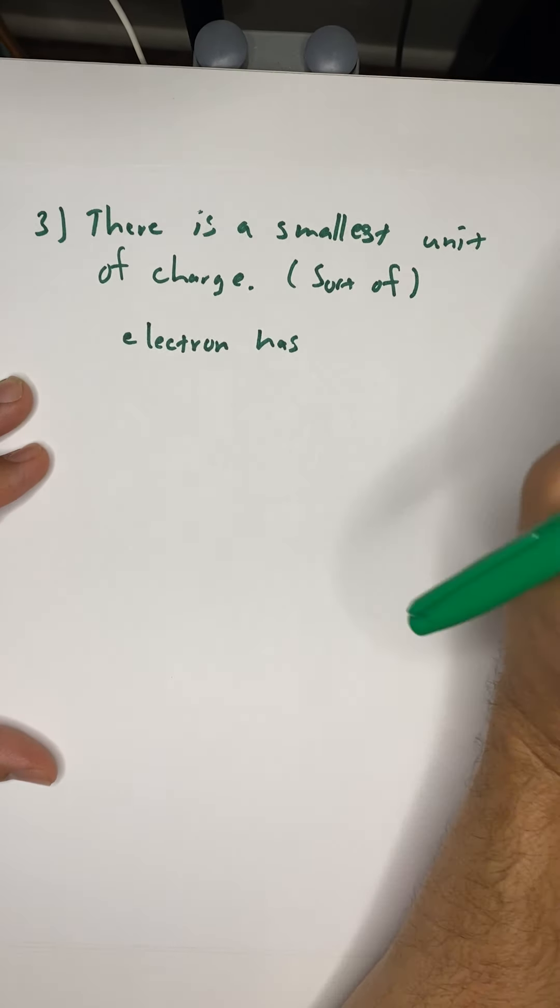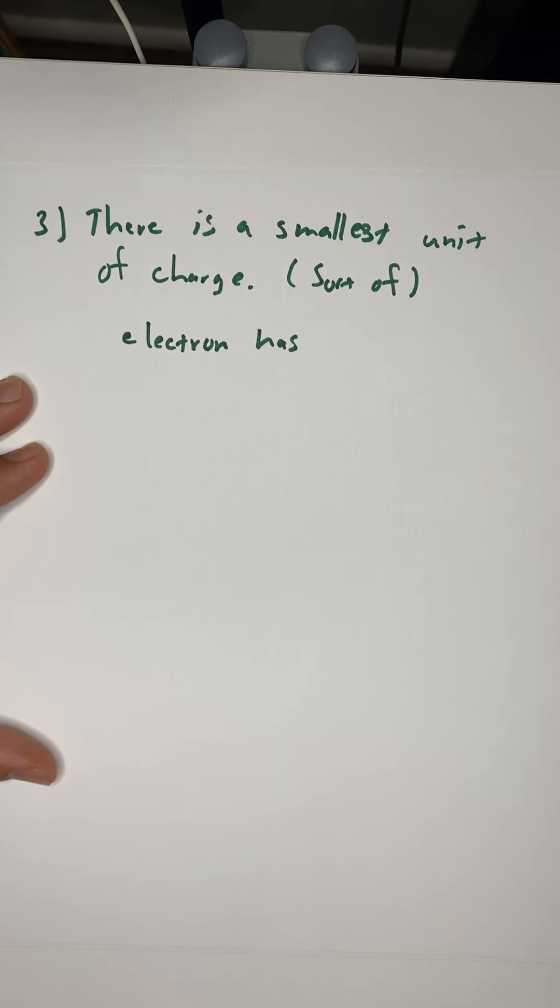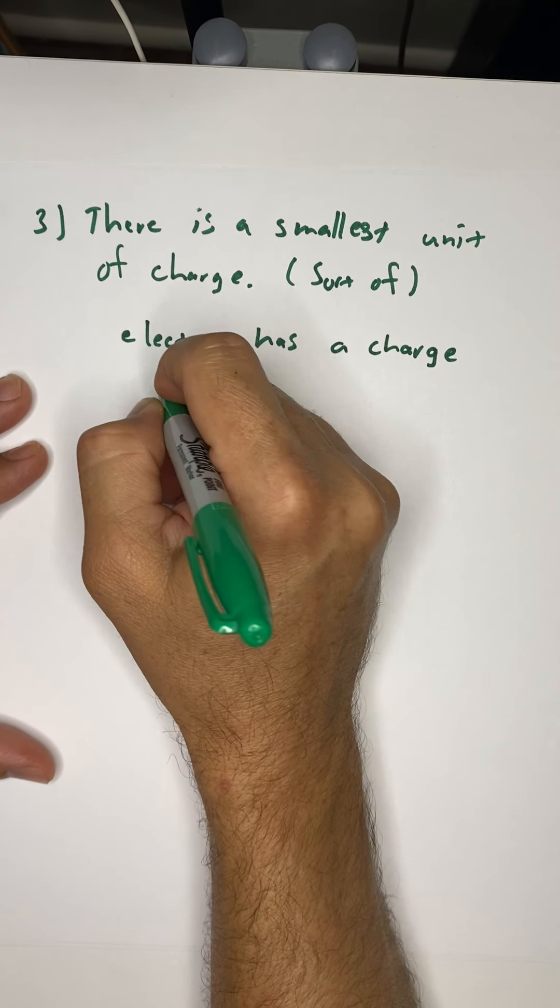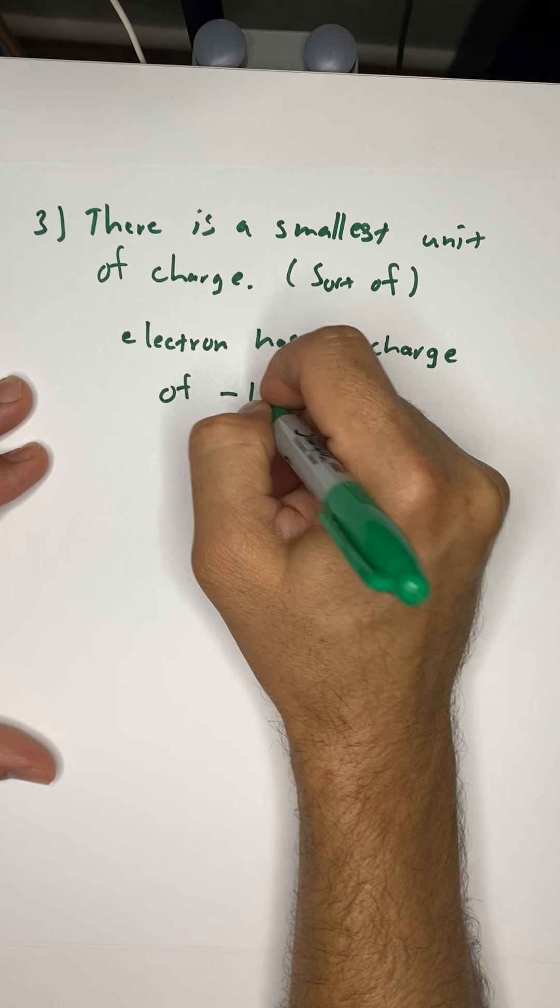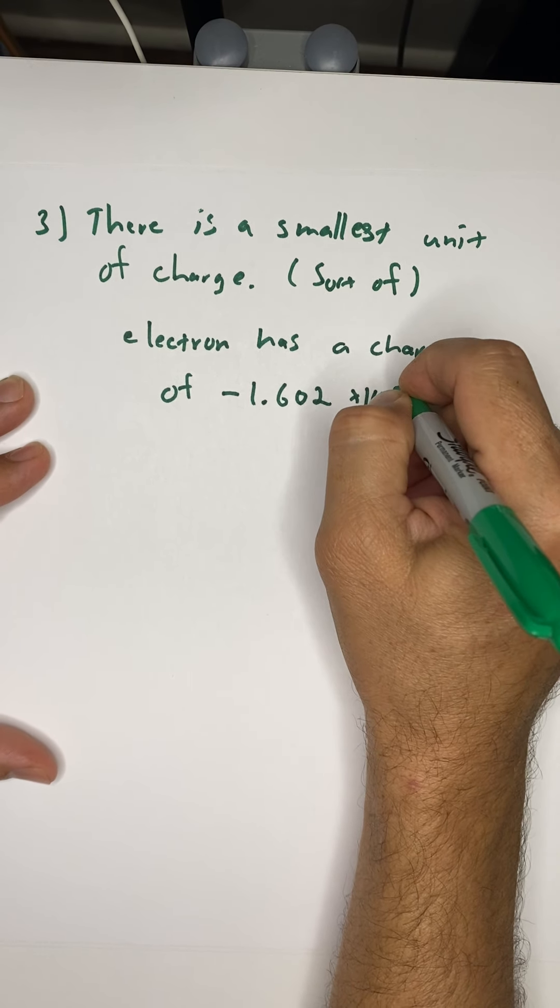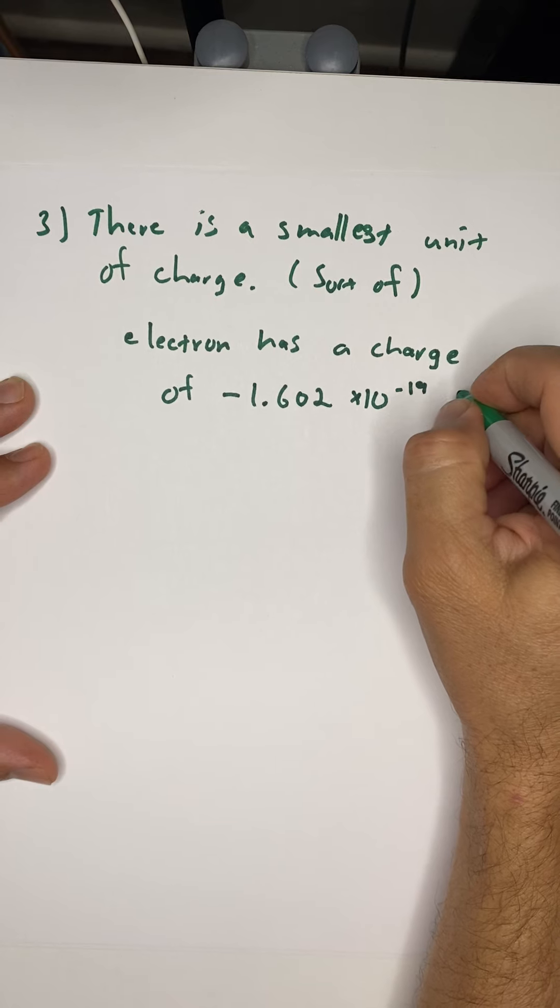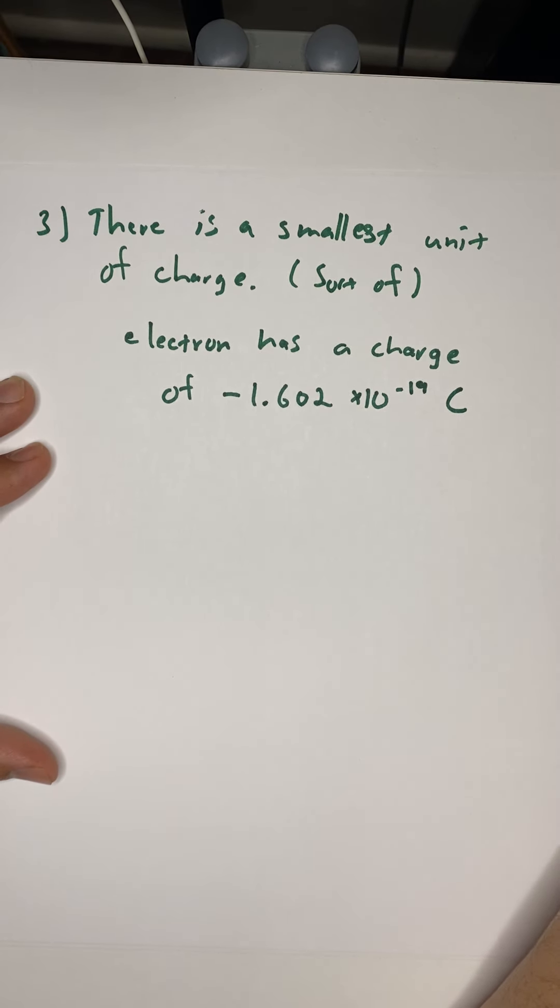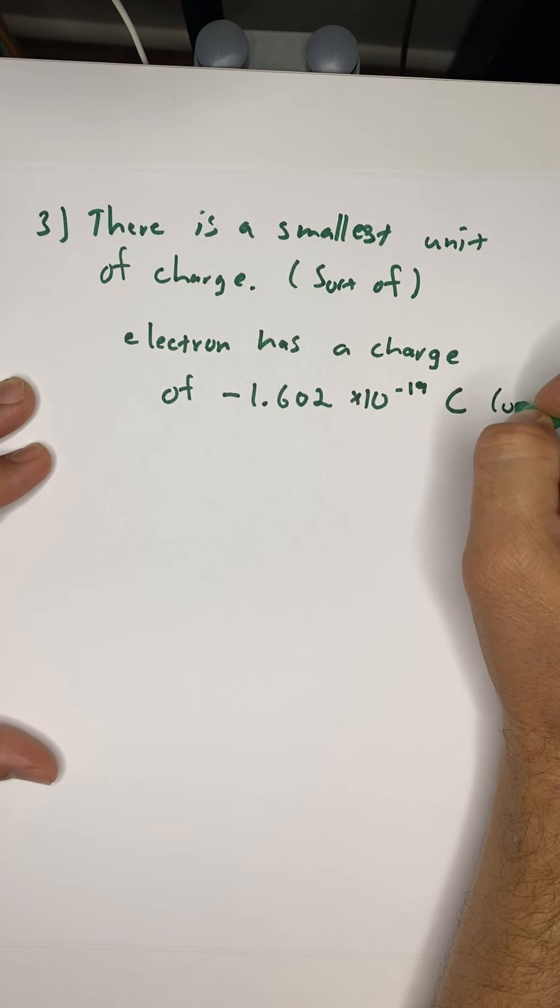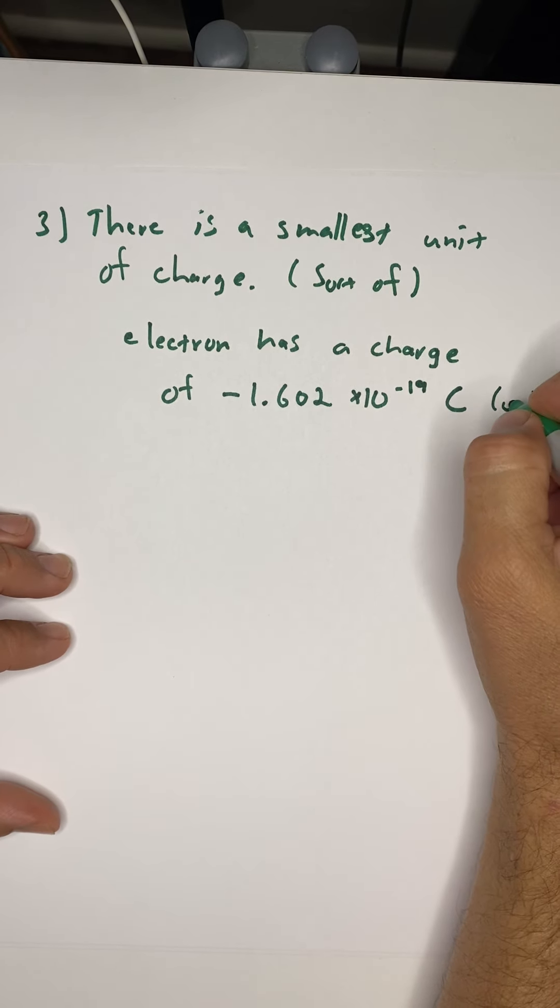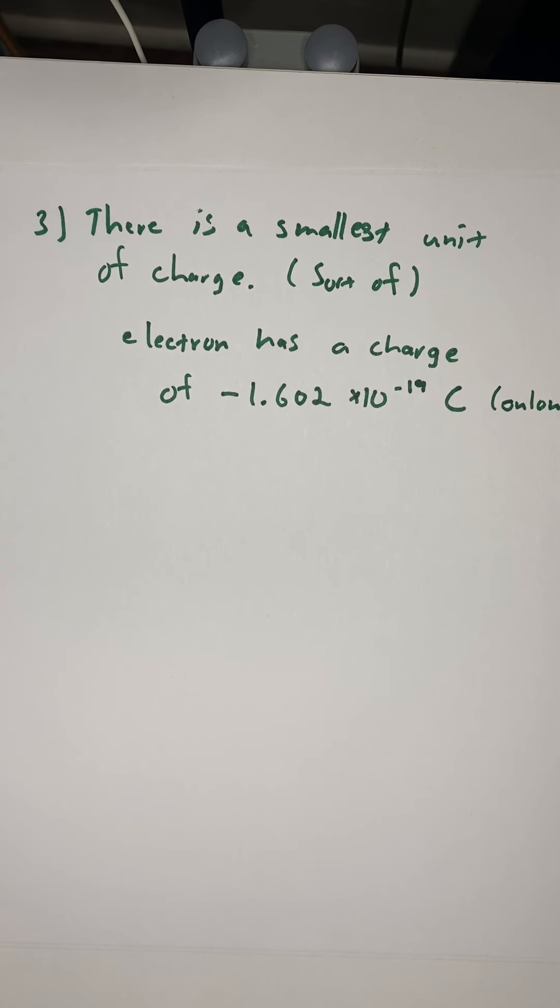An electron has a charge of minus 1.602 times 10 to the negative 19th. That's a very small number. The units of charge are going to be Coulomb, which I will write with an uppercase C. That is after the French physicist Charles Coulomb. But the units of charge are Coulombs. The electron has a charge of minus 1.602 times 10 to the negative 19th. That is rounded. There are more decimal places if you're interested.